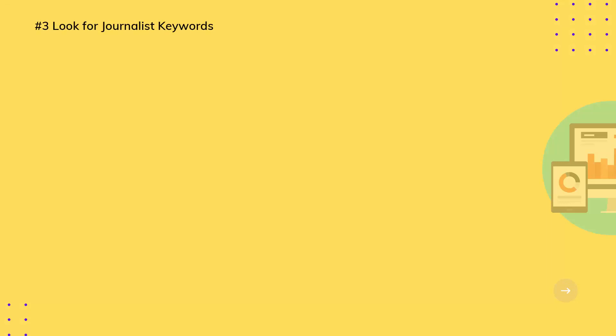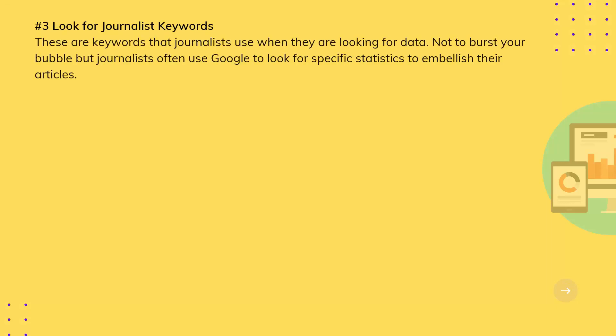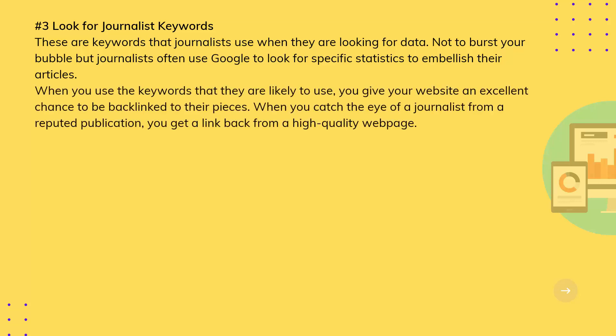Number 3: Look for Journalist Keywords. These are keywords that journalists use when they are looking for data. Not to burst your bubble, but journalists often use Google to look for specific statistics to embellish their articles. When you use the keywords that they are likely to use, you give your website an excellent chance to be backlinked in their pieces. When you catch the eye of a journalist from a reputed publication, you get a link back from a high-quality webpage.